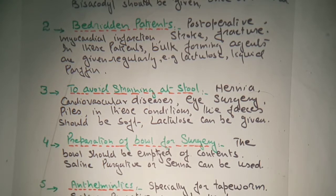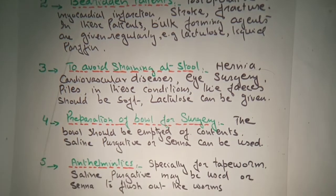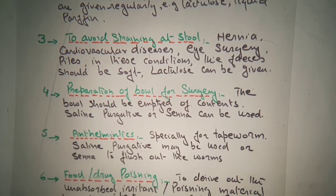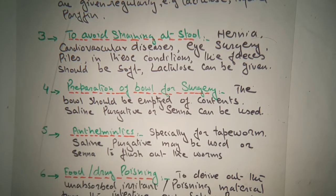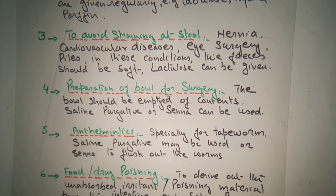Anthelmintics cause irritation of the bowel before surgery. Anthelmintics are used especially for tapeworms, because particularly these tapeworms are present in children. Anthelmintics can be used to evacuate the stool, and when the stool is passed by the children, automatically the tapeworms are also expelled. Senna compound can be used for this purpose to flush out the bowel.